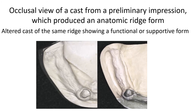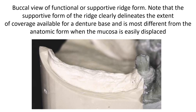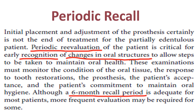Shown here is an occlusal view of a cast from a preliminary impression, which produced an anatomic ridge form. The buccal view of the supportive or functional ridge form clearly delineates the extent of coverage available for a denture base, and is most different from the anatomic form when the mucosa is easily displaced.